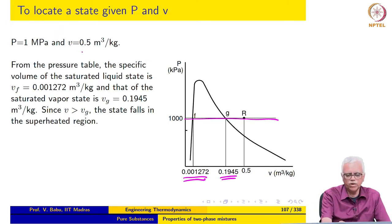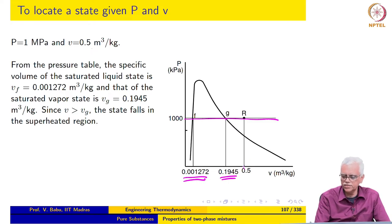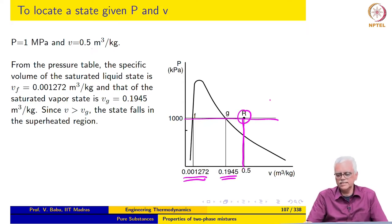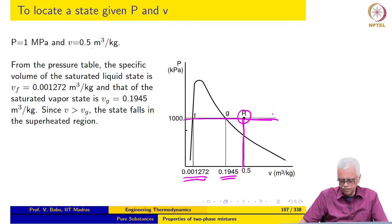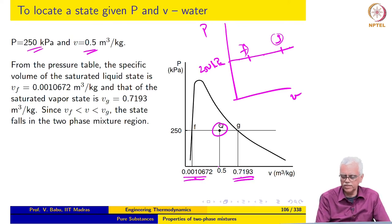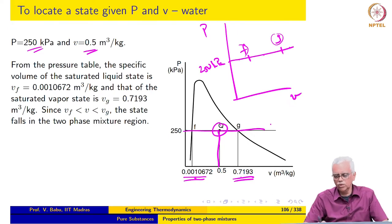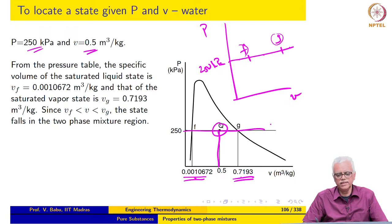The given specific volume of 0.5 is greater than Vg corresponding to this pressure. So the given state lies at the point of intersection of V = 0.5 and P = 1000. Similarly, the earlier state lies at the intersection of V = 0.5 and P = 250. Note that these diagrams are not to scale — they are qualitative.